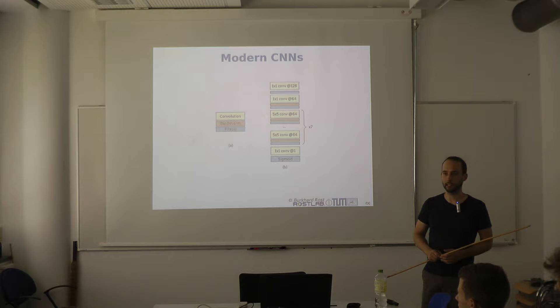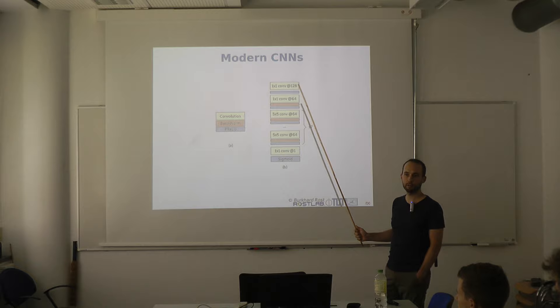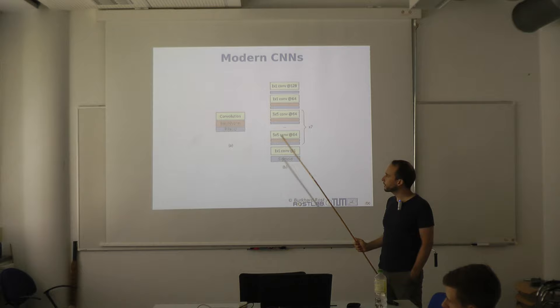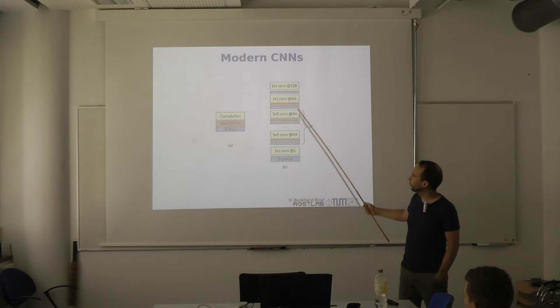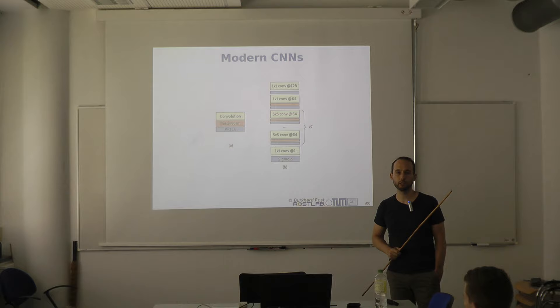In more modern CNN incarnations, a basic building block starts with a convolution kernel, followed by a batch normalization layer, then a nonlinear activation function — such as ReLU, leaky ReLU, sigmoid, etc. Batch normalization normalizes the data in each layer, which is important in deeper architectures to counteract vanishing gradients. It's present in all modern architectures and has largely replaced dropout.